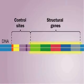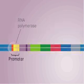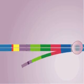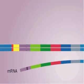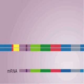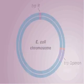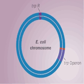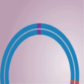The operon controls expression of five genes. These structural genes are transcribed when RNA polymerase can bind the promoter controlling them. But when the cell has lots of tryptophan, why waste energy making more? The tryptophan operon is at one position on the circular bacterial chromosome, and a regulatory gene for the system is about a quarter of the way around the chromosome from it.